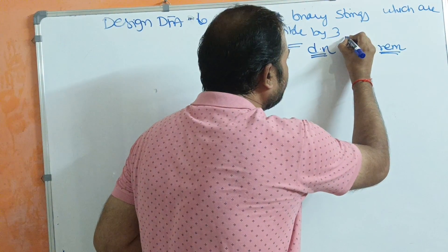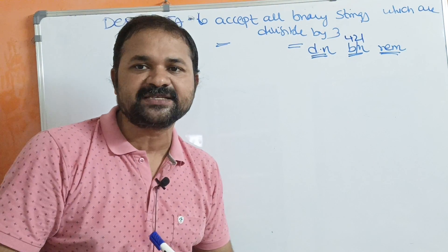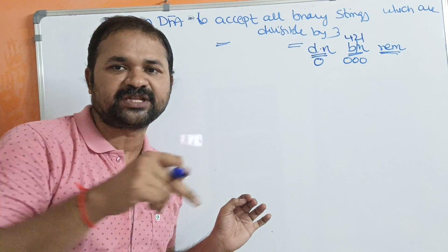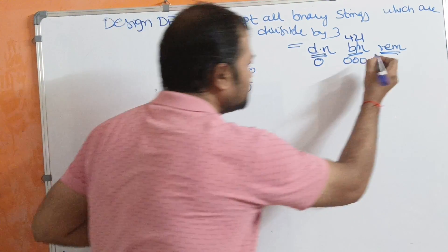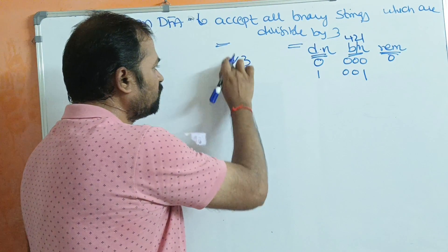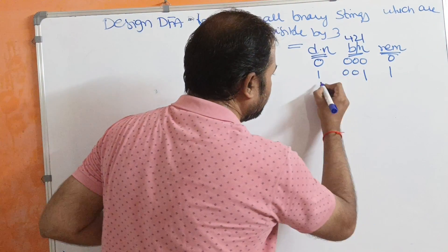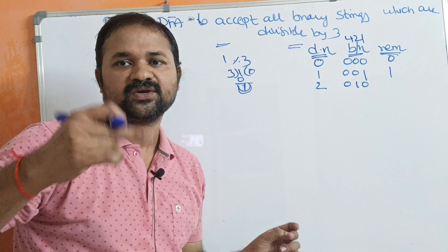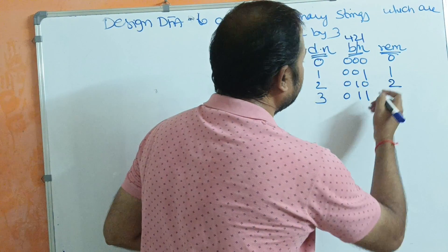For binary representation, we can use 2-1, 4-2-1, or 8-4-2-1 notation. Here I'm using 4-2-1 notation for decimal numbers 0 to 7. So 0 is written as 000, and 0 modulo 3 equals 0. Decimal 1 is represented as 001; 1 modulo 3 gives remainder 1. Decimal 2 is represented as 010; 2 modulo 3 gives remainder 2. Decimal 3 is represented as 011; 3 modulo 3 equals 0.